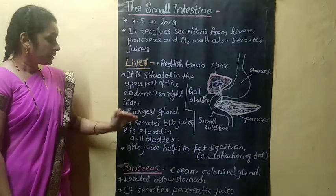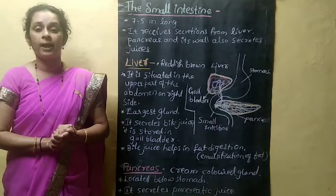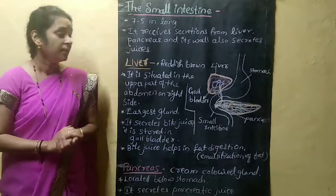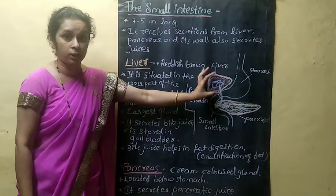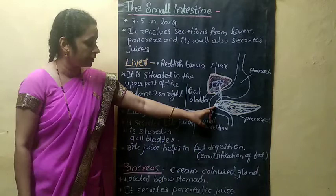The liver secretes a juice that is called bile juice, or simply bile. This bile secreted by the liver is temporarily stored in a sac-like structure called the gall bladder, which is present in the liver. The bile juice is then transported through a tube called the bile duct into the small intestine.